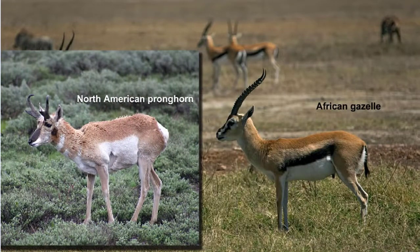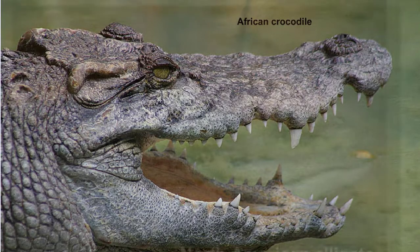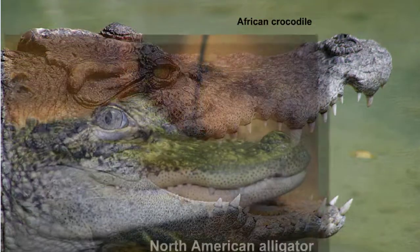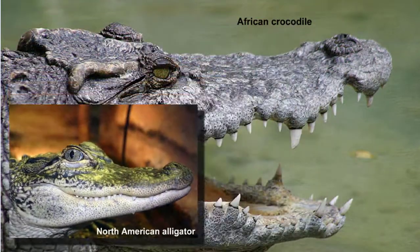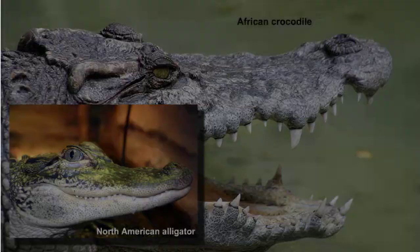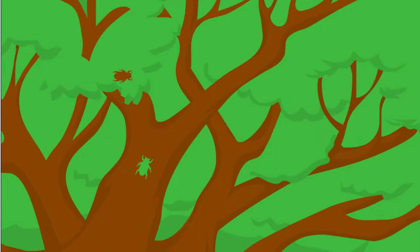Darwin noted that there are thousands of species of beetles. Why the great variety when only a few dozen species would do? To answer these questions, let's explore a little bit. Suppose we have a species of beetles which live in the branches of a tree.